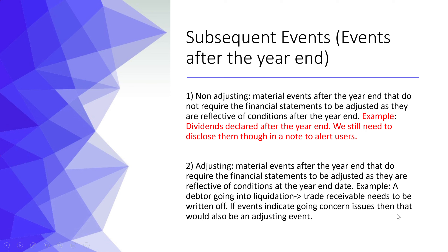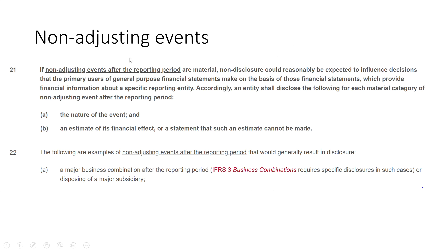Also noted in the standard: if there are any events that indicate going concern issues, that would be an adjusting event. For non-adjusting events, you only disclose if you think they're going to be material. At minimum you need to disclose the nature of the event and an estimate of its financial effect, or a statement that such an estimate cannot be made. Examples of non-adjusting events include disposal of a company you own or a dividend declared after the year-end.